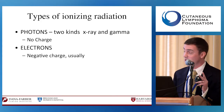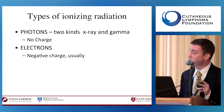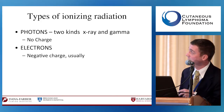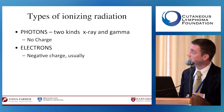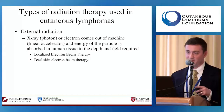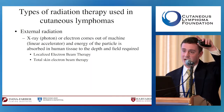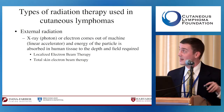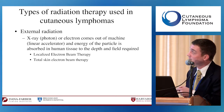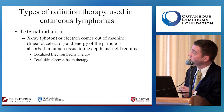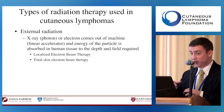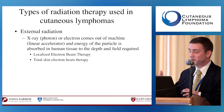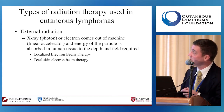For today, we're talking about two types of ionizing radiation. Photons—which can be X-rays or gamma rays—do not have an inherent charge. Electrons have a negative charge. External radiation is where an X-ray or electron comes out of a machine called a linear accelerator, which amplifies that subatomic particle so it has a lot of energy. It is absorbed in human tissue to the depth required in the treatment field.